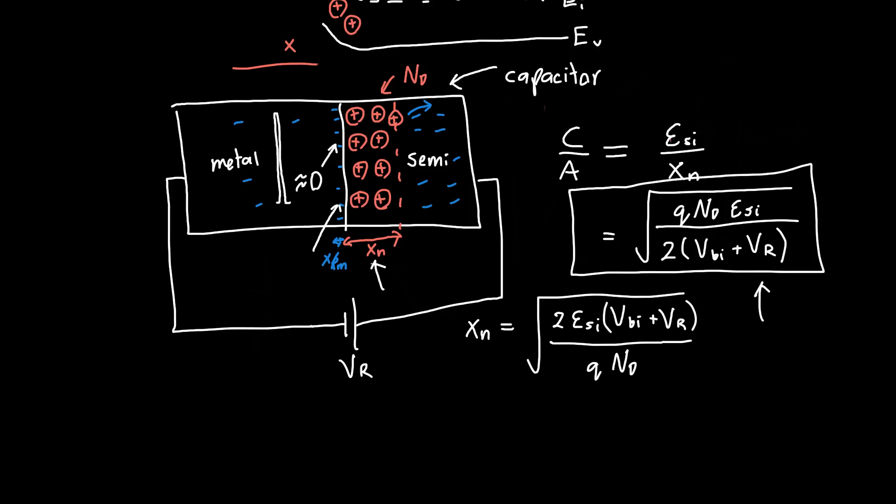This will turn out to be super useful for taking measurements, for semiconductor measurements. Because if we know the capacitance, we can apply different voltages Vr and measure the capacitance at each of those voltages. That basically allows us to deduce the doping concentration, as well as the built-in potential Vbi, both of which are super useful if you're someone who's interested in how devices will behave when you've got a metal connected to your semiconductor.